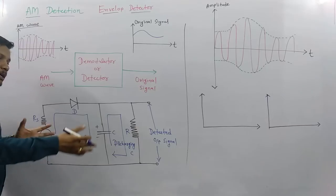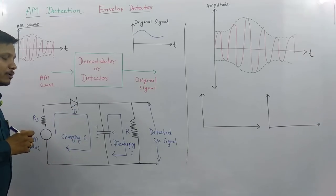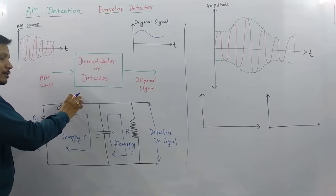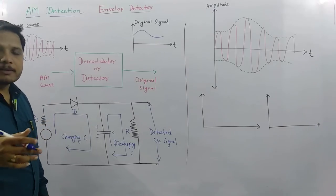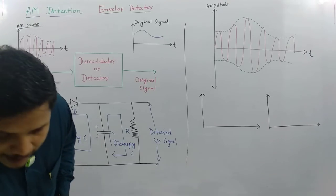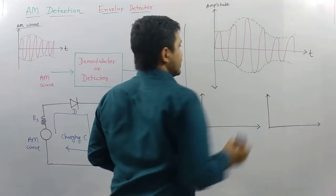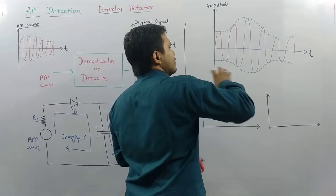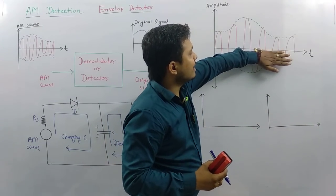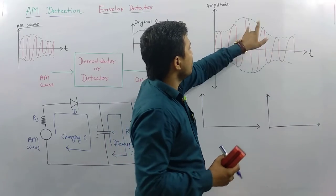Before explaining how to select these components, let us first understand what happens with respect to the waveform. We have the AM signal as input. When this AM signal passes through the diode acting as a rectifier, the negative half cycles get clipped. So here we have the AM signal, and once passed through the diode rectifier circuit, the negative portions are removed and only the positive half cycles remain.